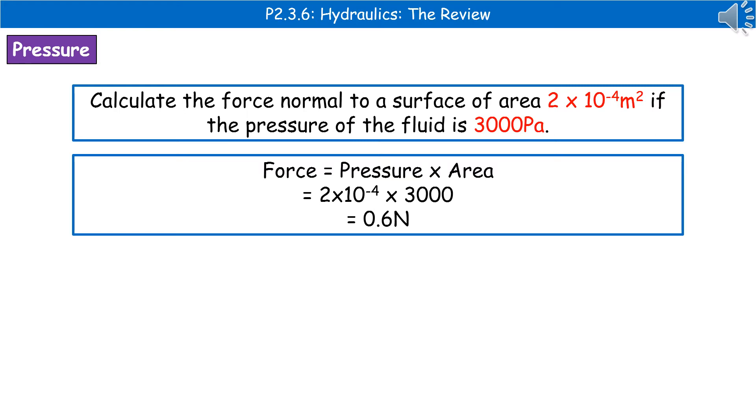Then we need to recall our formula. Force is pressure times area. Substitute in our values: 2 times 10 to the minus 4 times 3000, and put that into our calculator to solve. It gives us the answer of 0.6 newtons.